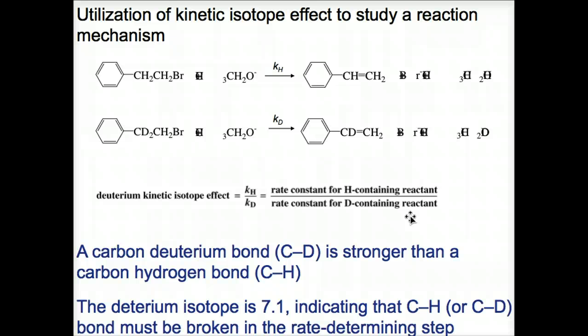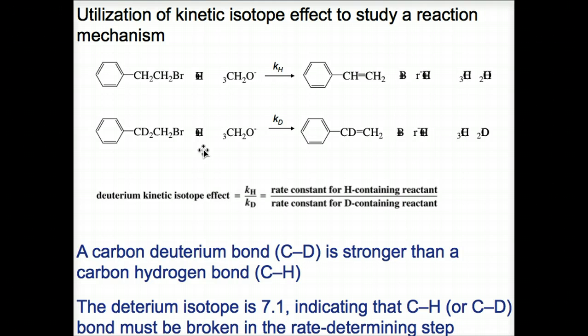The nucleus of a deuterium contains one neutron and one proton, while the nucleus of a hydrogen atom contains one proton. The chemical properties of hydrogen and deuterium are similar, but the carbon-deuterium bond is stronger than the carbon-hydrogen bond, so the carbon-deuterium bond is harder to break. The rate constant for the elimination of HBr from 1-bromo-2-phenylethane compared to the rate constant for the elimination of deuterium bromide is 7.1 times greater. Since this number is greater than one, we know that the carbon-hydrogen or carbon-deuterium bond must be broken in the rate-determining step — this is consistent with the mechanism for E2.